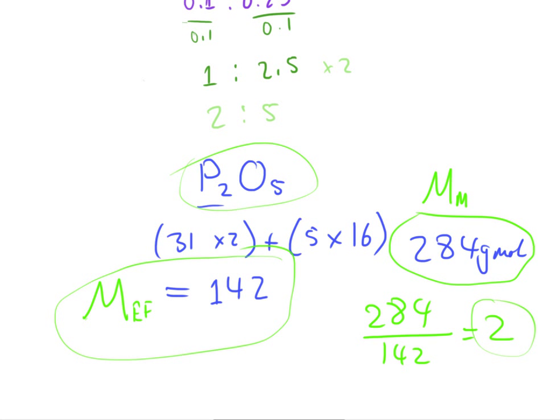So, therefore, we found that our factor is 2. And all we need to do now is multiply our 2 subscripts here by 2. And that would scale it up to be the molecular formula. So, therefore, the molecular formula of this particular molecule is going to be P₄O₁₀. And that's basically all you need to do to work out the molecular formula of a molecule, given its empirical formula, or after working out its empirical formula. There you go.